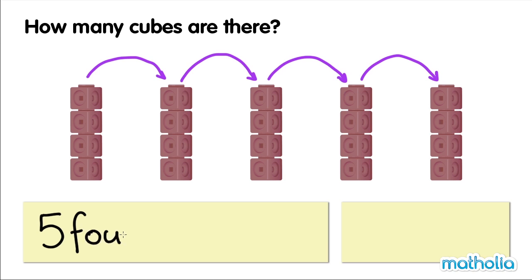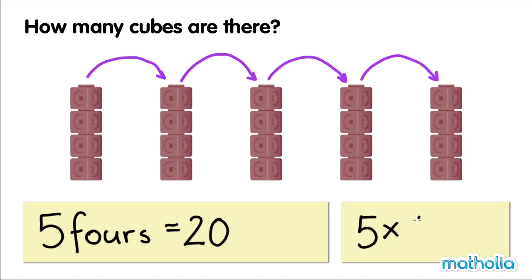Five fours equals twenty. Five times four equals twenty.